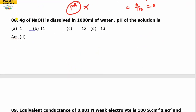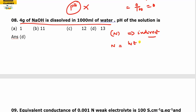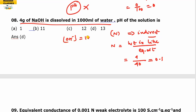Question 8: Normality = weight per liter / equivalent weight. Given 4 grams of sodium hydroxide dissolved in 1000 mL of water, and the equivalent weight of NaOH is 40, normality = 4/40 = 0.1. This is a basic solution, so hydroxide ion concentration = 0.1 = 1×10⁻¹. Therefore pOH = 1, and pH = 13. Your answer is D.